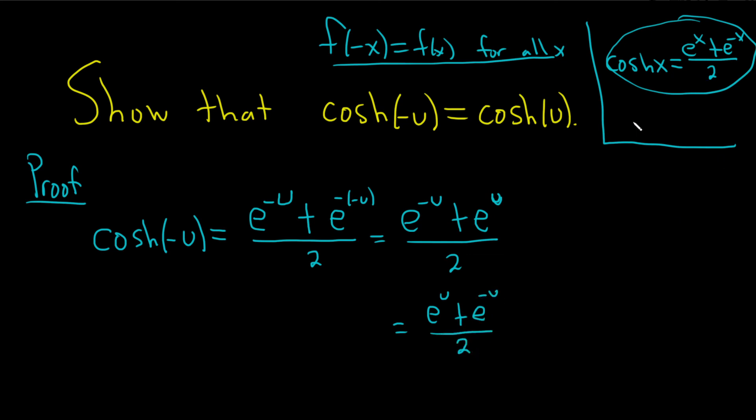And now we're at the definition of cosh. So this is equal to the cosh of u. So really simple, just plugging it in and realizing that all you have to do is rearrange them because addition is commutative and that completes our short proof. And this basically shows that the hyperbolic cosine is an even function.